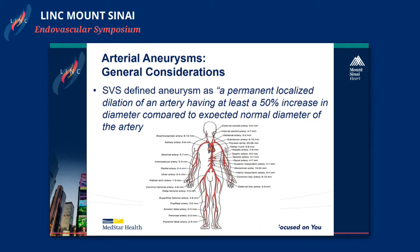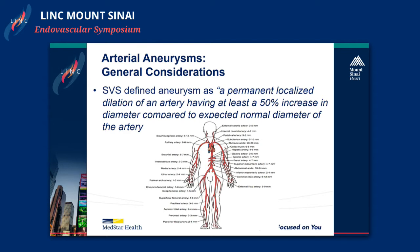I don't have any disclosures. An aneurysm is really defined as an increase of about 50% of the diameter from what would be expected. Looking at various arteries, if you have a greater than 50% increase, you can define that as being aneurysmal. Obviously, there are true and false aneurysms. True aneurysms involve all layers of the arterial wall, whereas false don't, like pseudoaneurysms, which are probably a little bit more urgent and may need to be fixed sooner.